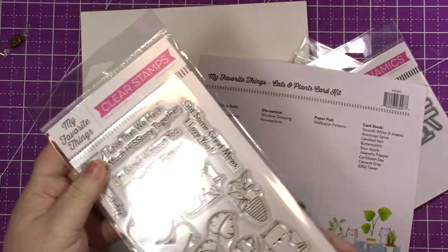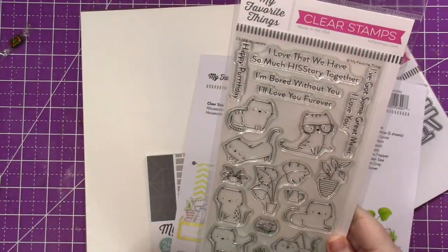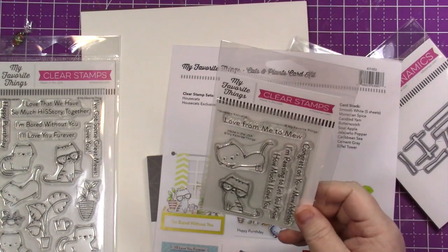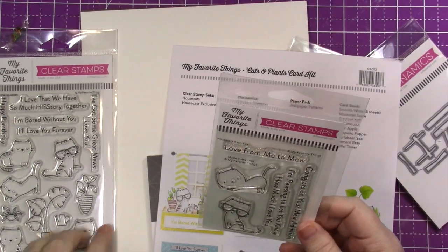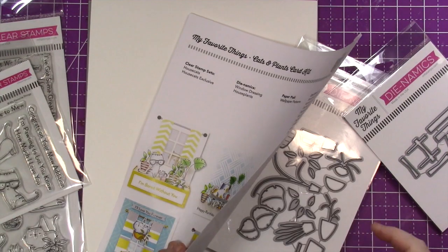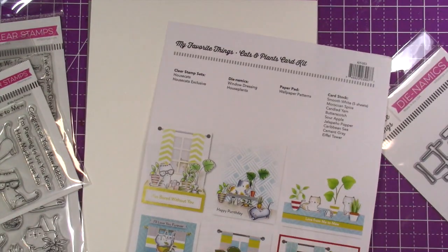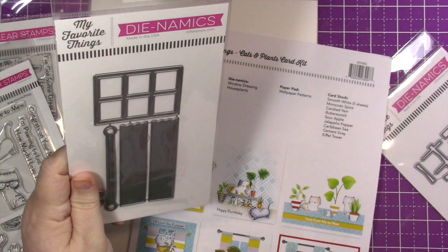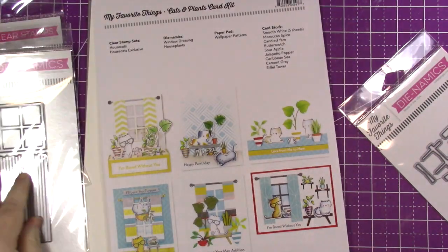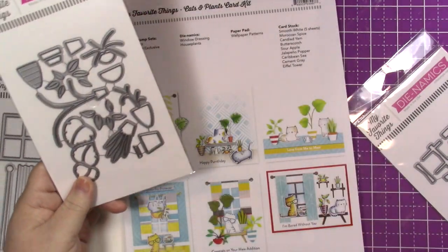So it comes with this. This is exclusive to this kit. So you can only get this one if you get this kit. It comes with the window dressing dynamics, so it makes the curtains and the rod and the window. And then it comes with the plants.